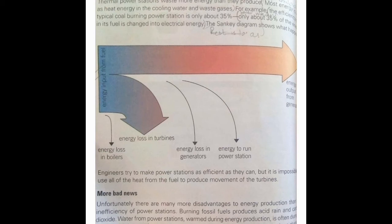Burning fossil fuels produces acid rain, because carbon dioxide is released into the environment, which causes acid rain that is dangerous to human health. Additionally, the water used during energy production is often dumped into a local river or sea. The increased water temperature can cause serious changes to the ecosystem.